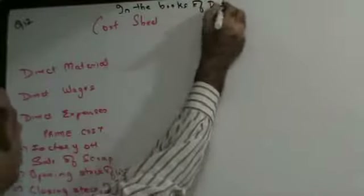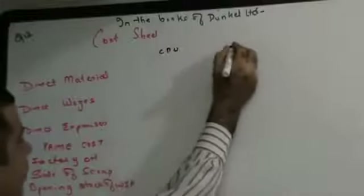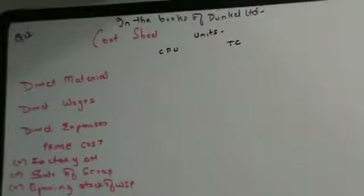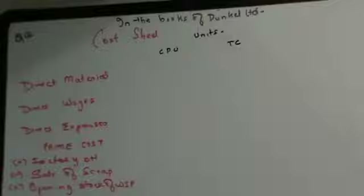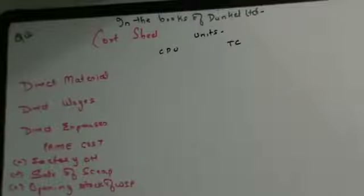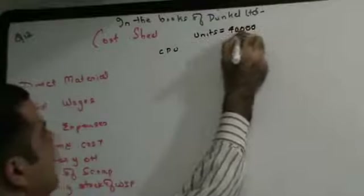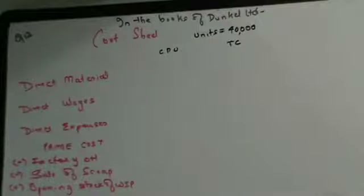Now let's see question number 12, in the books of Duncan Limited. You have to write CPU (cost per unit), PC (total cost), and units — whatever units are produced. Duncan Limited started a factory in Navi Mumbai on 1st April. At the end of the sum, units produced is 40,000. They have given you that raw material consumed is at the rate of 7 rupees per unit.